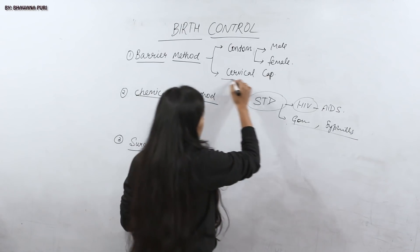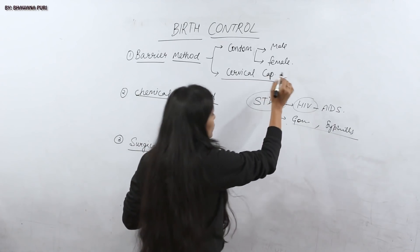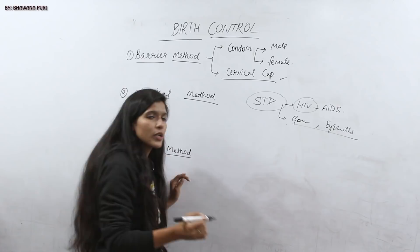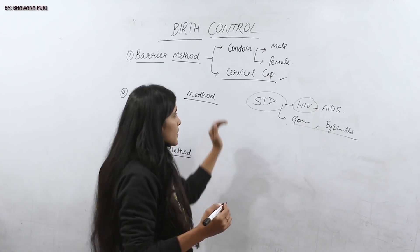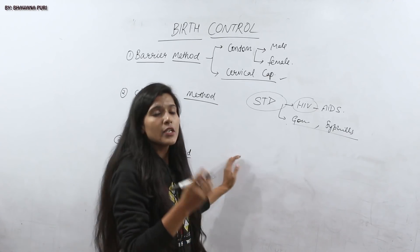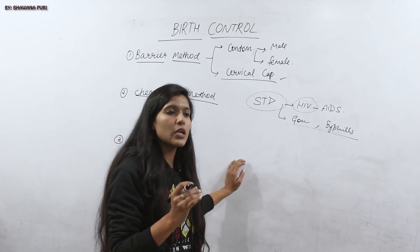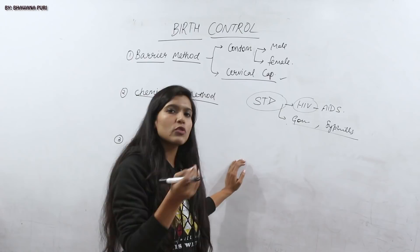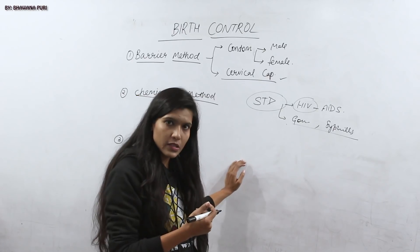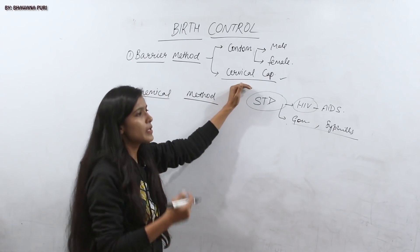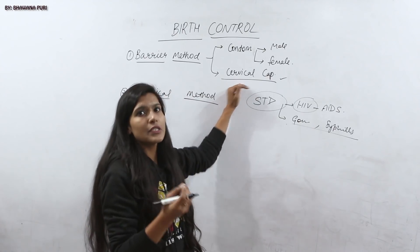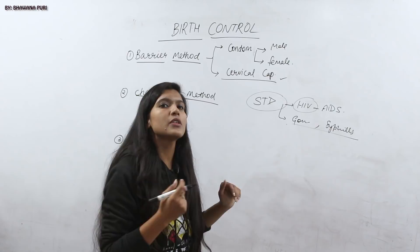Next is the cervical cap, which can be introduced into the female body. This device is inserted into the female body and prevents male gametes, or sperm, from entering.